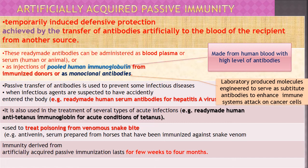Injections of pooled human immunoglobulin from immunized donors are used — those donors have already been immunized by some vaccines, and the antibodies formed in their blood are used. Alternatively, monoclonal antibodies can be used.